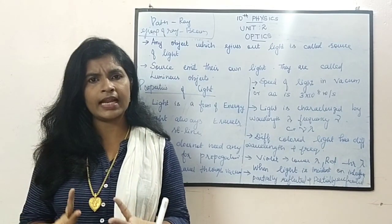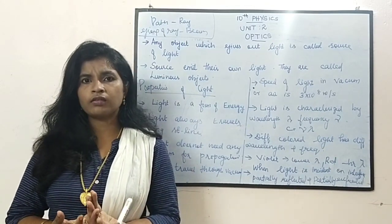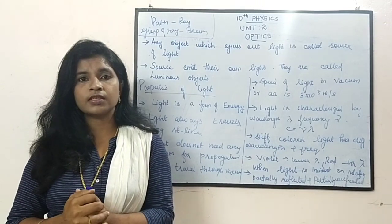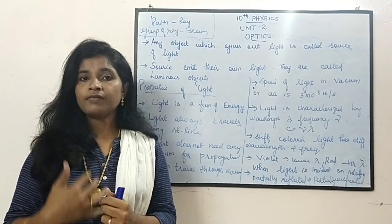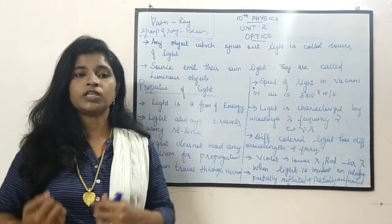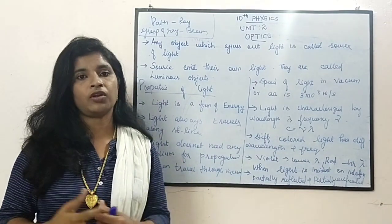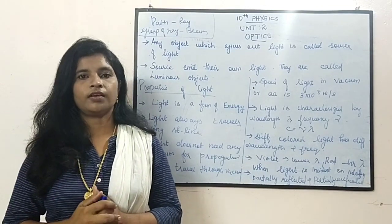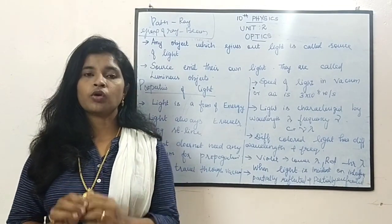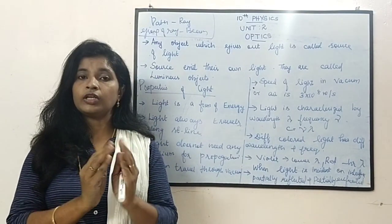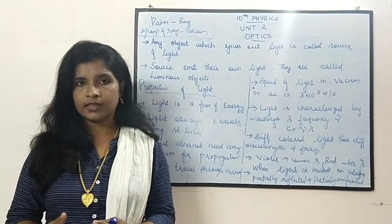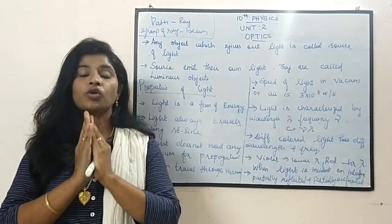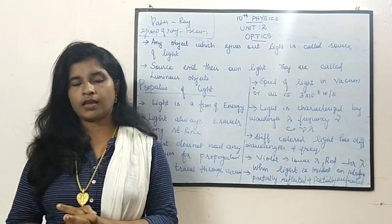What is meant by energy? When you can say that I am an energetic person — whenever we are having some capacity to do a particular work, we will say that I am energetic. So energy means it will do some work. Here, light is also a form of energy.